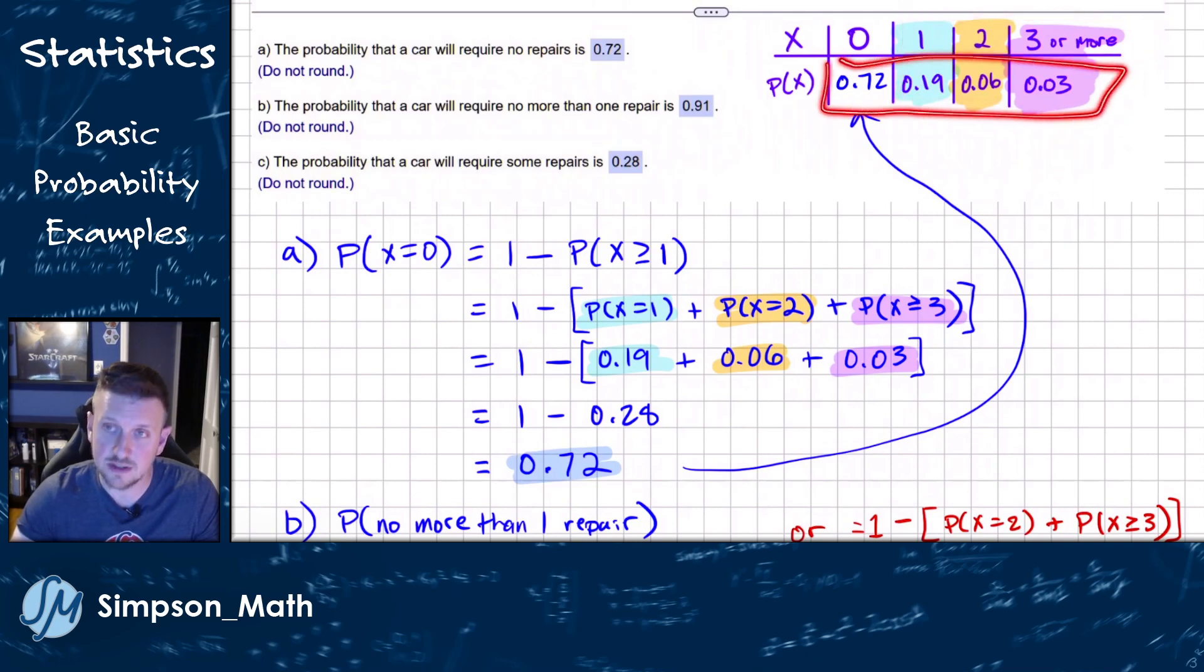Because remember, the sum of all the probabilities, the sum of our sample space must be one. So that's why I know that I can add these up and subtract from one. So really, at the end of the day, just add these three numbers up, subtract from one, and you'll get this 0.72.